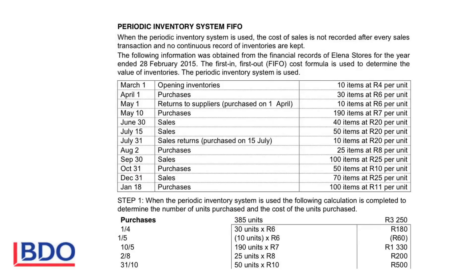Good morning. When the periodic inventory system is used, the cost of sales is not recorded after each transaction. Only at the end of the year, a calculation is done to determine the cost of sales. No continuous record of inventories is kept during the year — you do not write in your inventory account during the year. Therefore, it is not necessary to work out the cost of sales figure after every transaction.